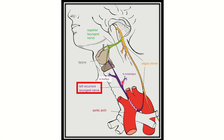From here we can see this is the left recurrent laryngeal nerve. It is called recurrent because it enters into the chest and then comes back up into the neck. That is the special characteristic of this nerve — it goes down first and then comes back to the upper part, reaching into the larynx.